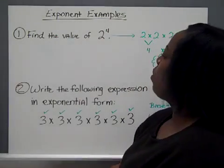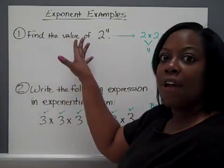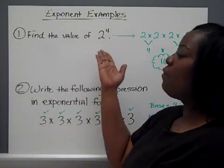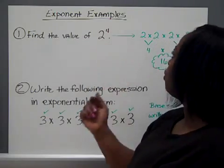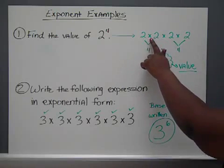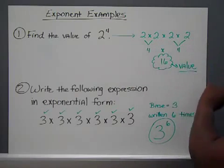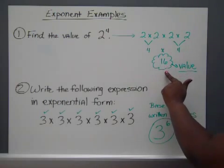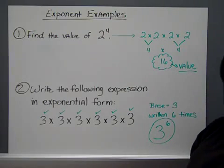Now, when they ask you to find the value of an exponent, for example, 2 to the 4th power, you would simply write it in expanded form as 2 times 2 times 2 times 2. Multiply the 2s, and you would get a value of 16.